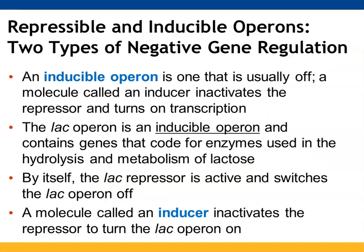The other type of operon we're going to talk about are ones that are typically turned off — inducible operons. There are molecules that can inactivate the repressor, known as inducers, and they help to turn on transcription. The lac operon is one of these inducible operons. It contains DNA that codes for genes that will produce enzymes needed to both hydrolyze and metabolize lactose. If there's no lactose present, you don't need this operon on, so by default the lac repressor is able to bind and turn off the lac operon. Inducers will inactivate this repressor and allow the lac operon to be transcribed to make these enzymes.